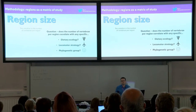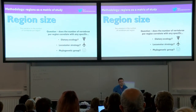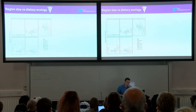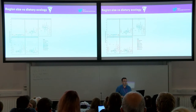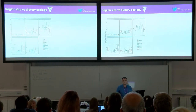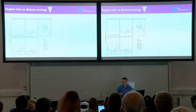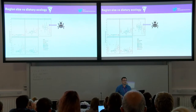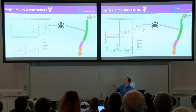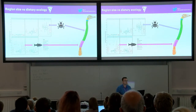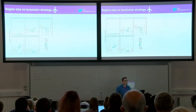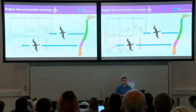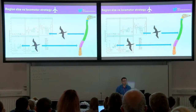Let's look at potentially some drivers behind this range in region size. Is it dietary ecology, locomotory mode, or is it more phylogenetically conservative? Here I've plotted a normalised plot of the number of vertebrae per region across multiple different dietary groups. There's actually very little significant variation between dietary groups. We only see differences between insectivores and all other birds in region 3 - the medial large region. We also see differences between piscivores and all other groups in region 4. We see a very similar pattern when we look at locomotor groups: very little significant variation, apart from soaring birds, where region 3 is different from all other birds.